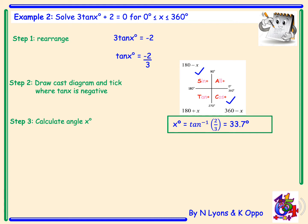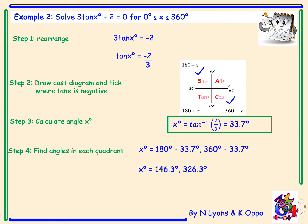We use 33.7 degrees to find the angle in each quadrant. In the second quadrant it will be 180 minus 33.7 degrees, and in the fourth quadrant it will be 360 minus 33.7 degrees. This gives a final solution of 146.3 degrees and 326.3 degrees.